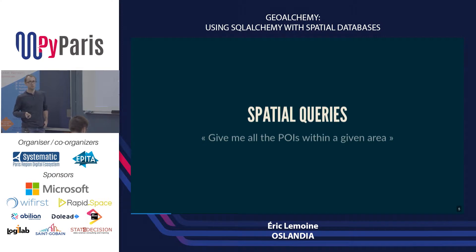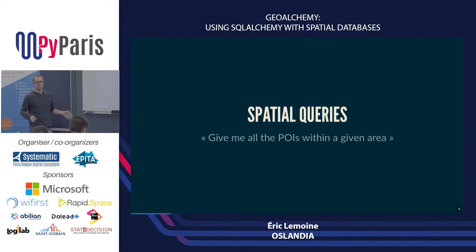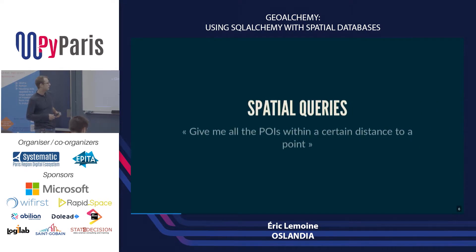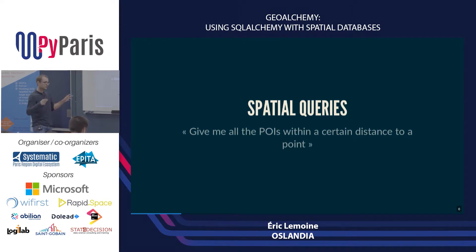If you have a geospatial database, you can do spatial queries. One example: give me all the POIs — points of interest — within a given area. So you have a polygon which represents an area, and you want to know all the POIs that are within this area. Very simple query, but very typical. Another one, which is very similar, is: give me all the POIs that are within a certain distance to a point — so filtering by a circle around a given point instead of a polygon.